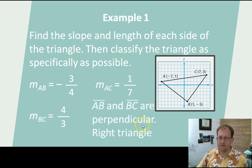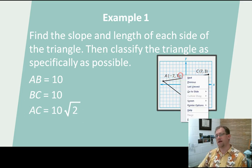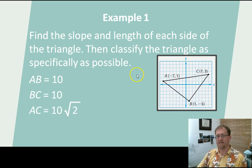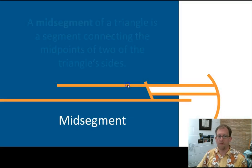And so, AB and BC are perpendicular, so it is a right triangle. Now, I want to look at the distances here. I can use the distance formula to find that the distance from A to B is 10, and the distance from B to C is 10, and the distance from A to C is 10 radical two. So, I've discovered that this is, in fact, a right isosceles triangle. Two sides are congruent.